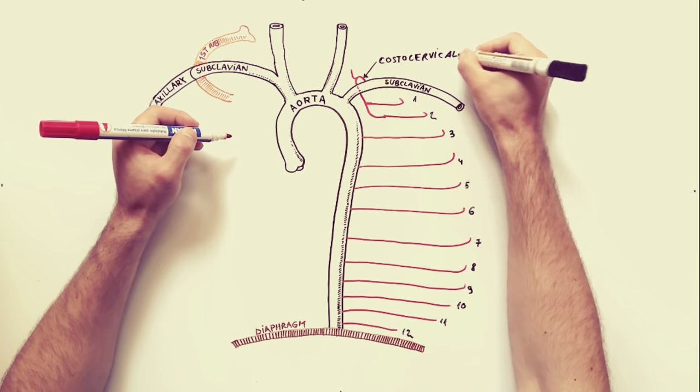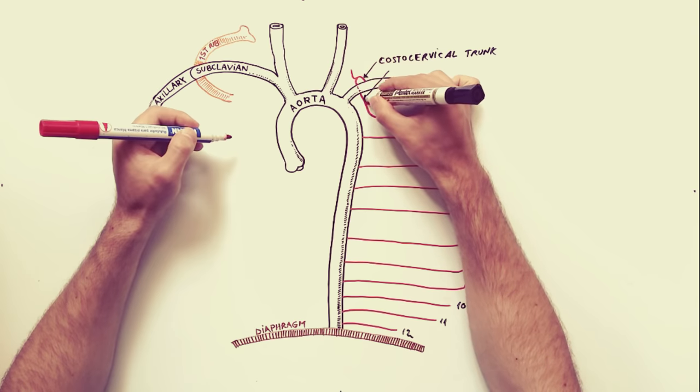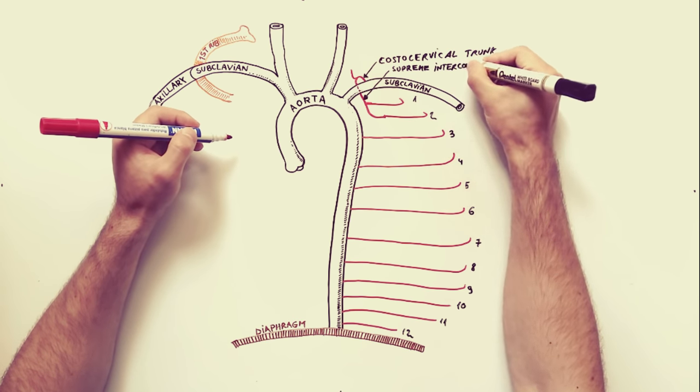One of them is the supreme intercostal artery. The supreme intercostal artery gives off the first two posterior intercostal arteries.